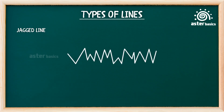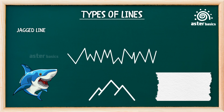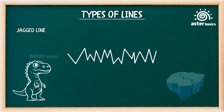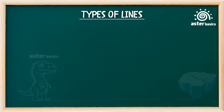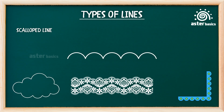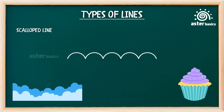Jagged line: sharp, irregular points — uneven and spiky. Used to draw sharp teeth, mountains, or torn edges. Jagged lines look rough and spiky, like a dinosaur's back or a crack in the ice. They're wild, scratchy, and super edgy. Scalloped line: a line made of small, connected curves like half circles. Scalloped lines are used to draw clouds, lace, or flower borders. They look like fluffy clouds or the edge of a cupcake — soft, bouncy, and full of cute little humps.